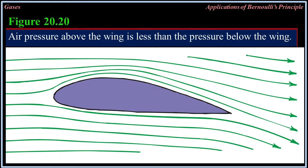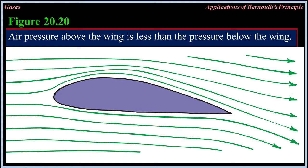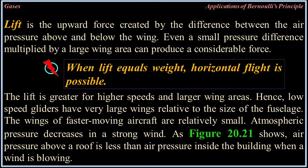Pressure above the wing is less than pressure below the wing. Figure 20.20: Air pressure above the wing is less than the pressure below the wing. Lift is the upward force created by the difference between the air pressure above and below the wing. Even a small pressure difference multiplied by a large wing area can produce a considerable force. When lift equals weight, horizontal flight is possible. The lift is greater for higher speeds and larger wing areas — hence low-speed gliders have very large wings relative to the size of the fuselage, while the wings of faster-moving aircraft are relatively small.